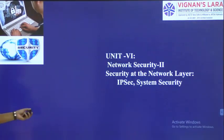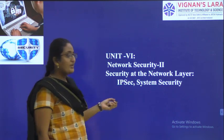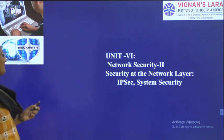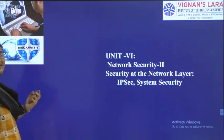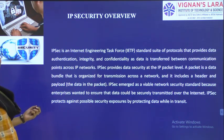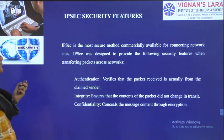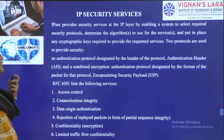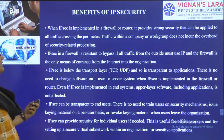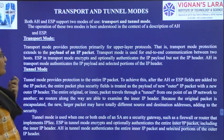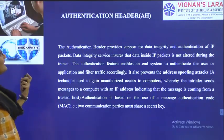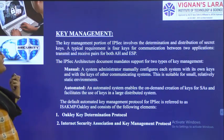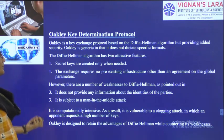We have started Unit 6 on security and the network layer. It has two parts: IP security and system security. For IP security we covered overview, features, elements, scenario, applications, services, benefits, architecture, modes, authentication header, encapsulating security payload, key management, and the two protocols.